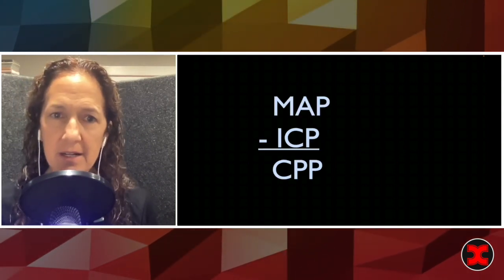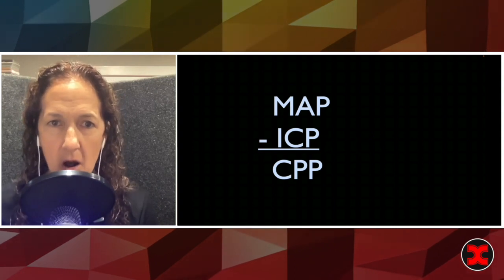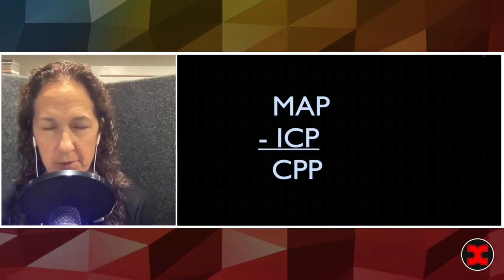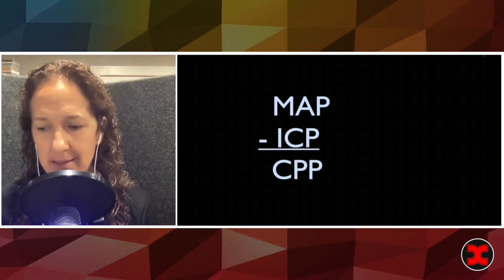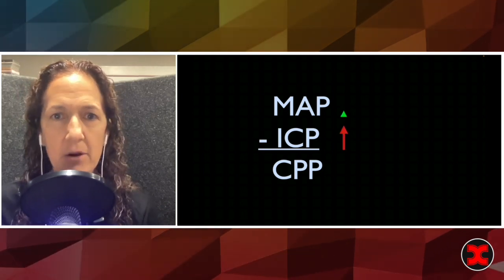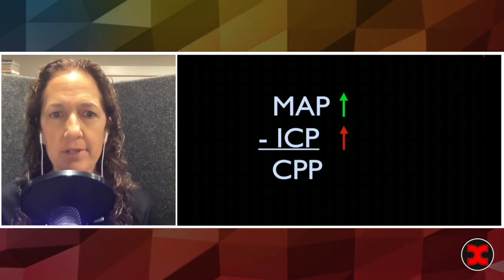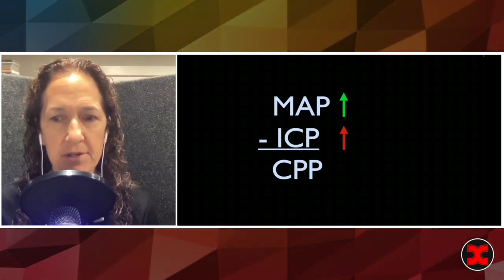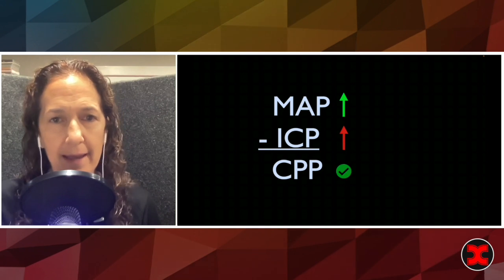The first thing to understand is it's all about the cerebral perfusion pressure, because as the ICP goes up, the mean arterial pressure has to go up to meet it in order to keep the cerebral perfusion pressure happy.